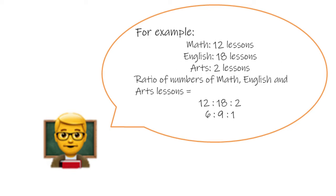For example, you have 12, 18 and 2 lessons of Maths, English and Arts, respectively in a cycle. We can say the ratio of numbers of Maths lessons, English lessons and Arts lessons is 12 to 18 to 2. Same as mentioned above, the ratio doesn't change when each term in the ratio is multiplied or divided by a same non-zero number. 12 to 18 to 2 can be therefore simplified to 6 to 9 to 1.